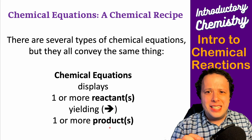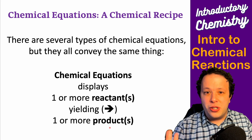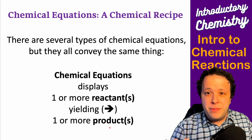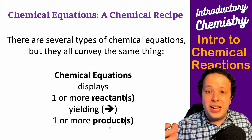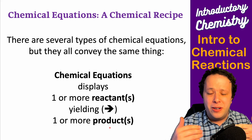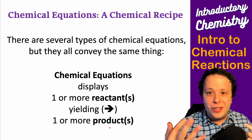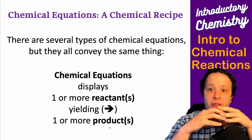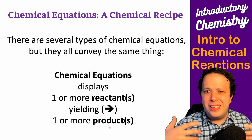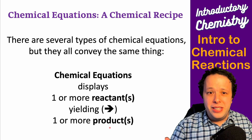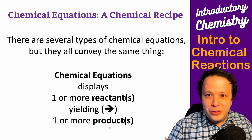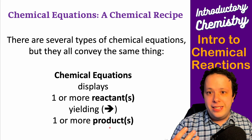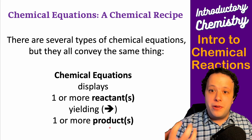A good way to think about this is like cooking at home — following a recipe when baking. You could have all your ingredients: flour, sugar, milk, eggs — these are your reactants. You mix them all together to create a cake or bread — something completely new. So you're yielding or creating these products. This is what we're going to be learning: how to balance these chemical reactions and how to predict them.